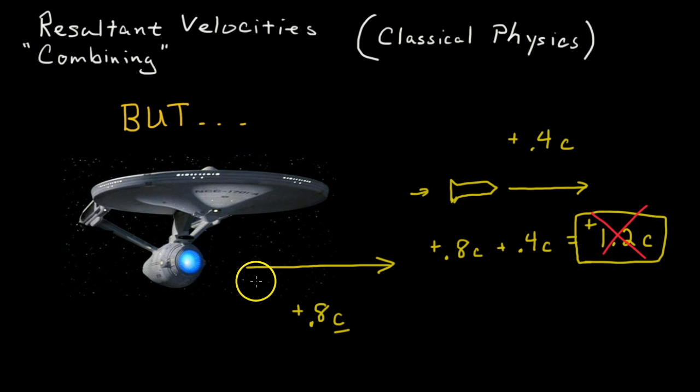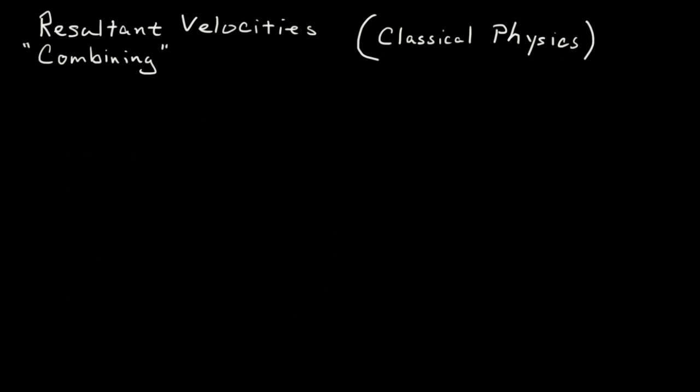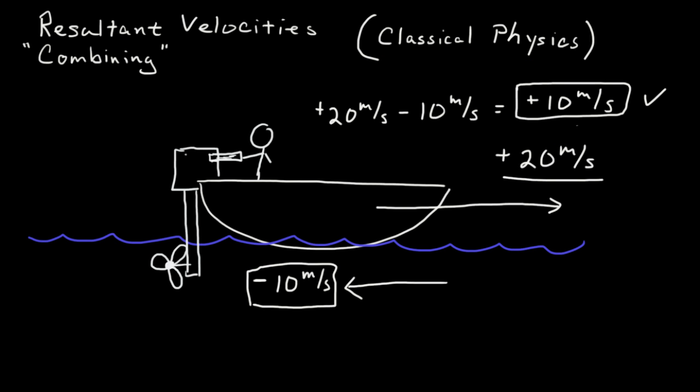And so you'll get to learn maybe in high school or maybe take a college physics class that this classical physics model that we've learned about is very close to being accurate, but it does have some flaws. But for our purposes, you simply add the velocities together. You combine those velocities. Just combine the velocities, and you end up with the resultant velocities.